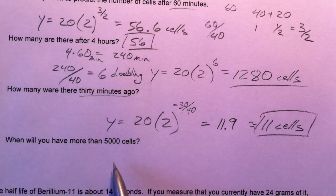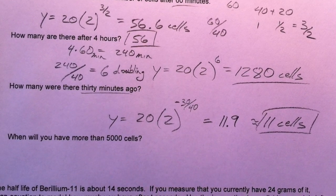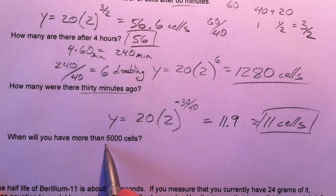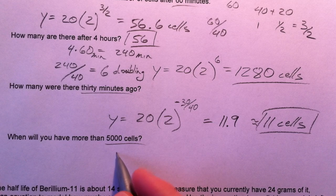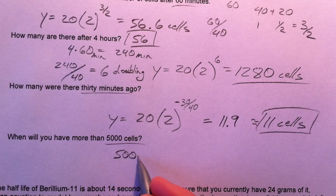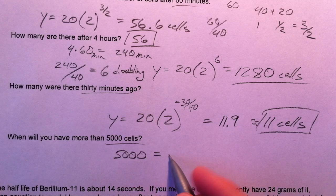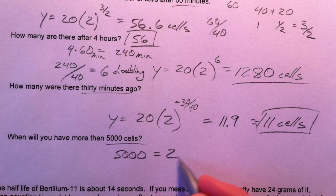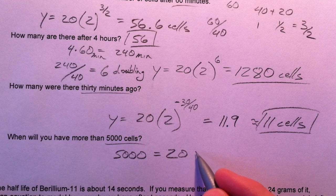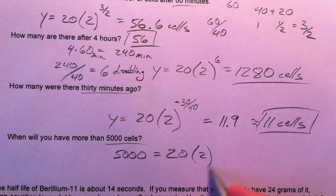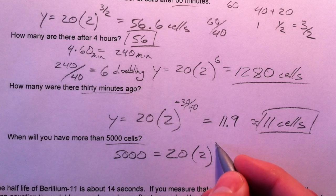When will we have more than 5,000 cells? We set 5,000 equal to 20 · 2^x and solve for x, which represents the number of doubling periods.